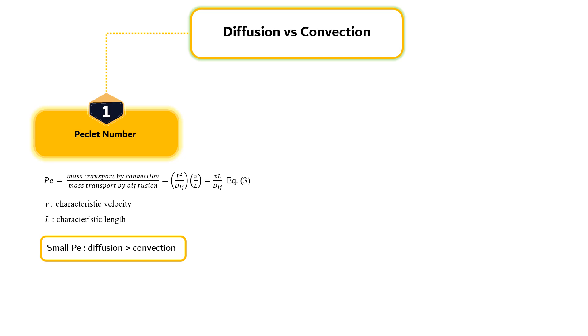Conversely, when the Peclet number is very large, convection is the dominant mode of transport. For a fixed length scale and velocity, diffusion is most important for small molecules such as oxygen.